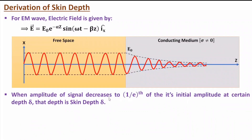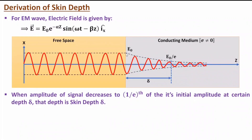When the amplitude of the signal decreases to 1/e times its initial amplitude at a certain depth, that depth is called the skin depth. For example, if the amplitude starts at E0 and at a certain depth it becomes E0/e, then that depth delta is the skin depth. So maximum amplitude stays on the surface, and as you go inside the conducting medium, the amplitude decreases. At a certain depth, it becomes 1/e times its maximum initial value — that depth is skin depth.